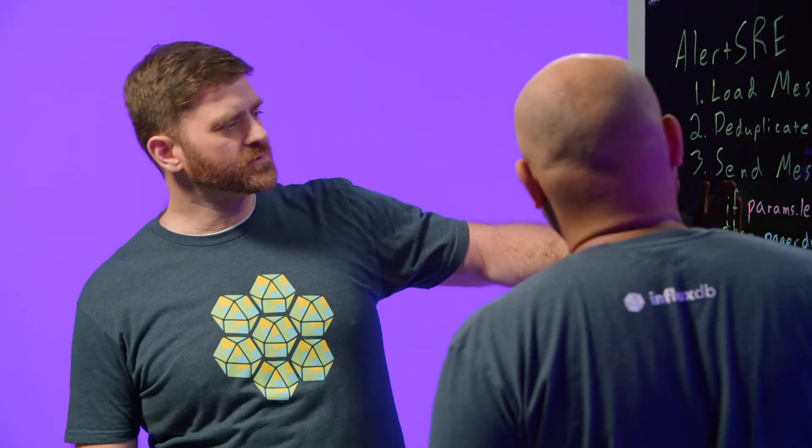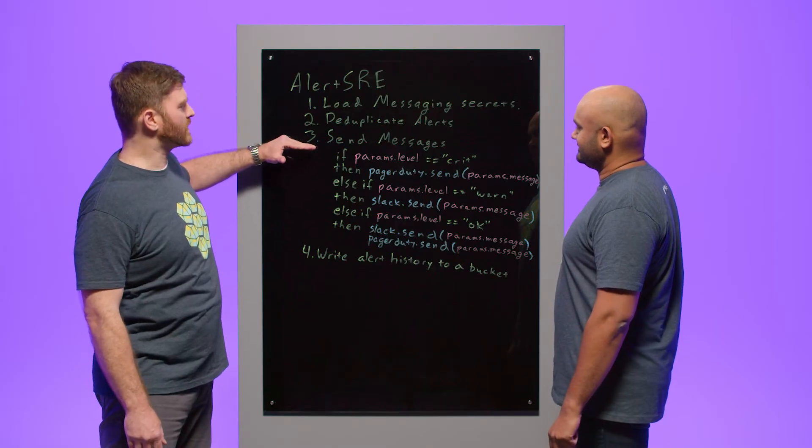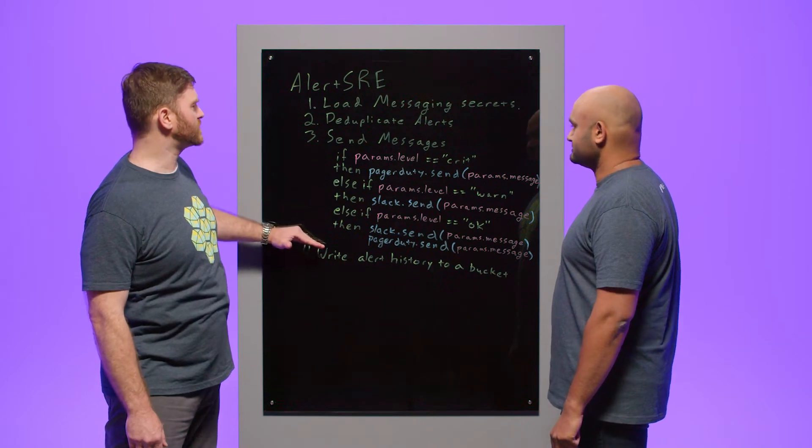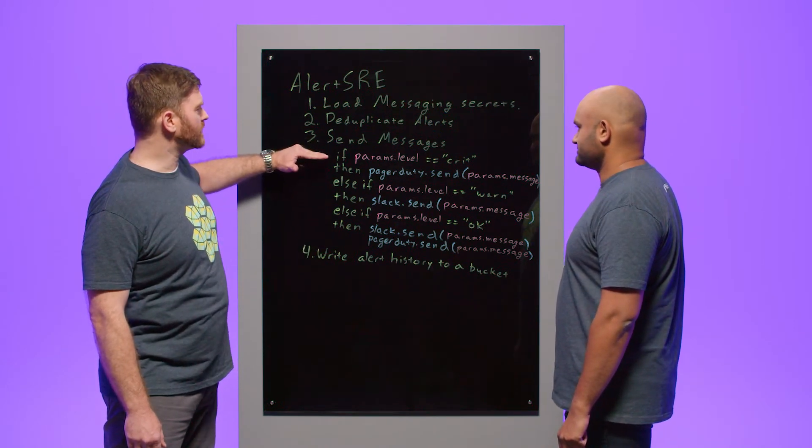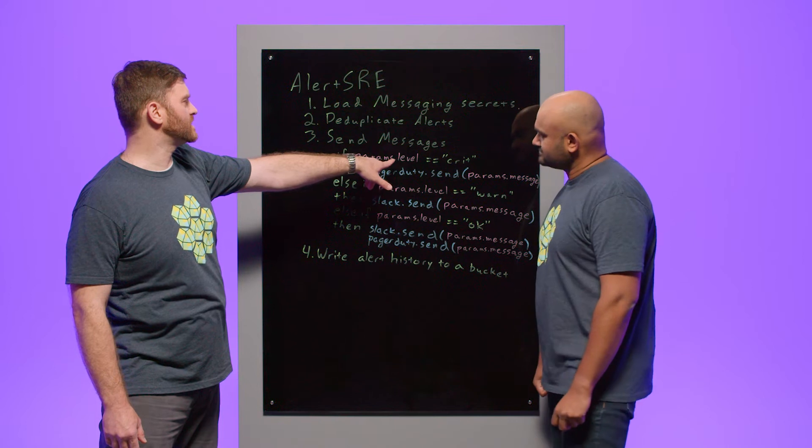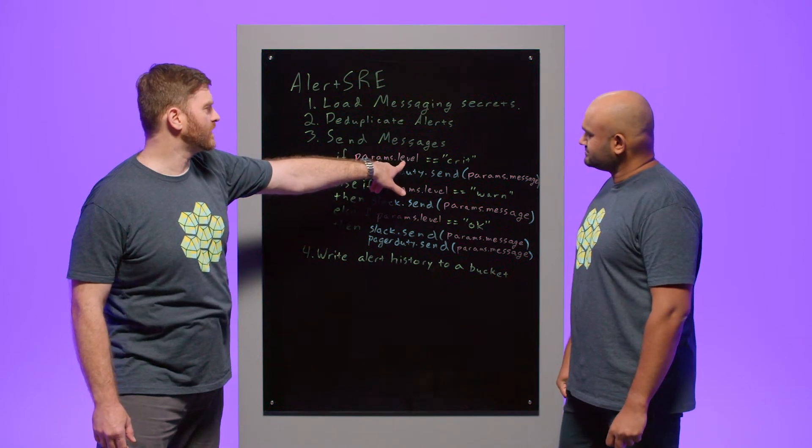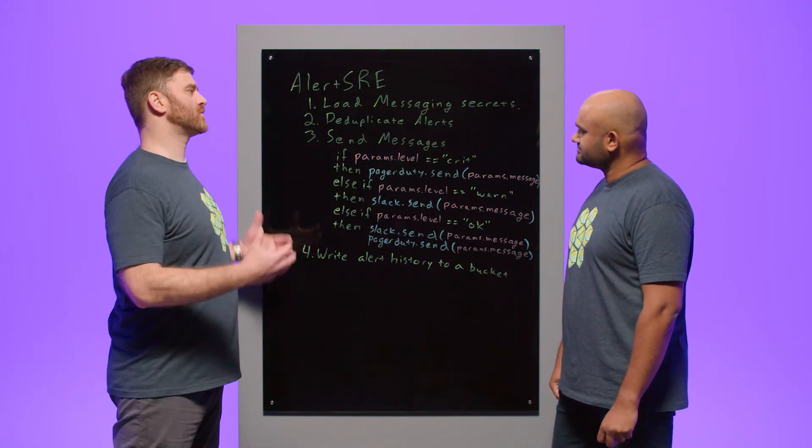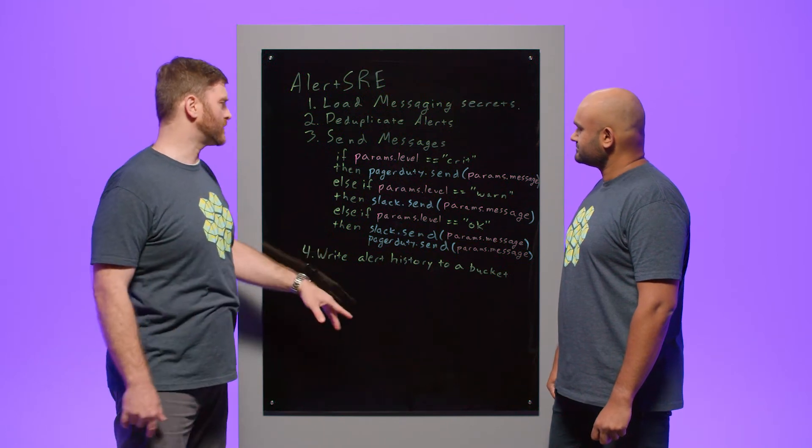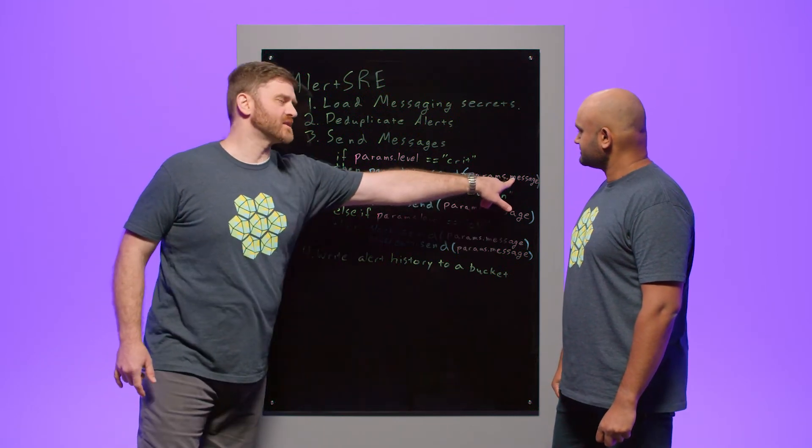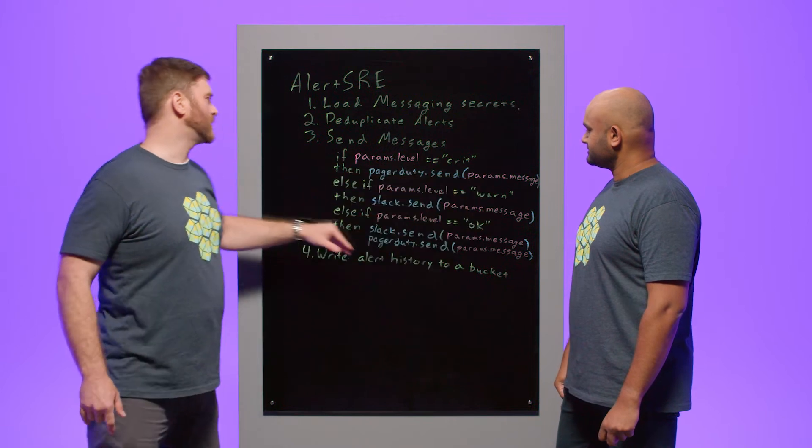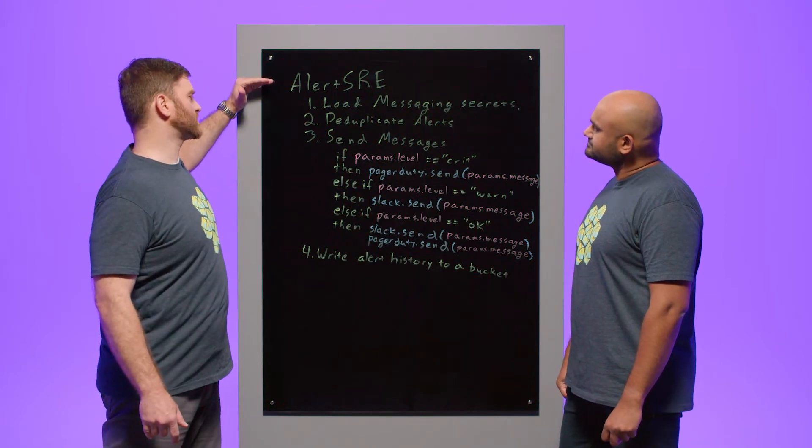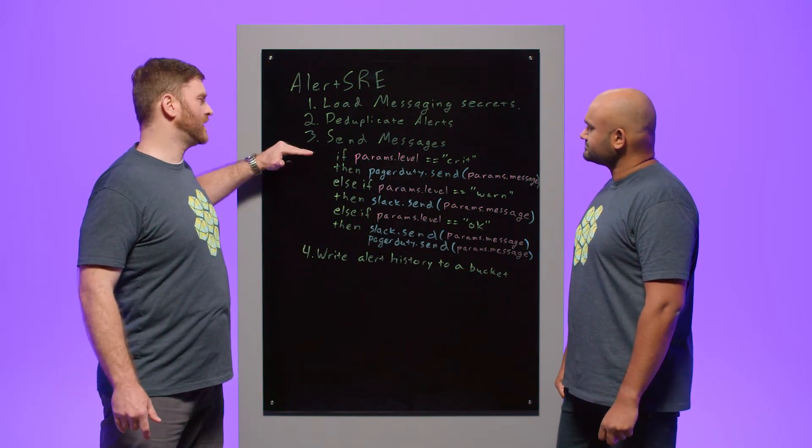And then this is the bulk of it where the logic to send messages. Yeah, this is the really heavy part, right? So here is where our policy really starts to take shape. And here we have two parameters that are coming into this script. We have the level. So this could be like a critical warning. Okay, info is another common one. And then we also have the message that we want to send.